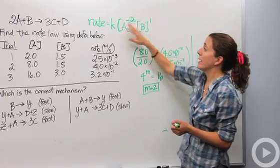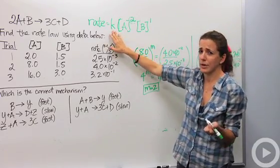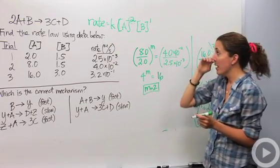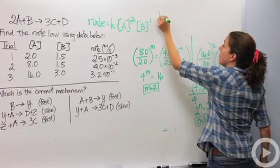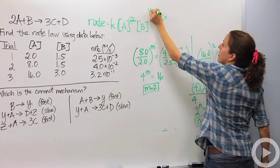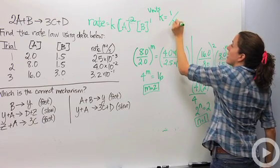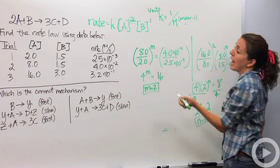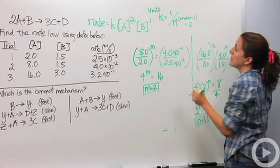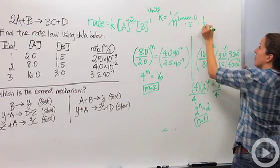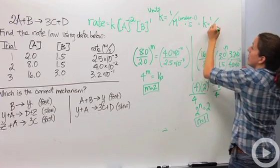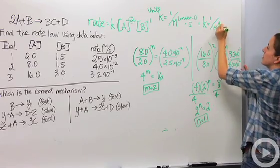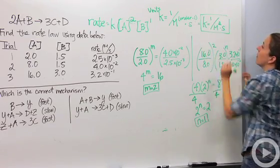So now we've found our rate law. We might also need to find the units for K. The units for K are fairly straightforward: K equals 1 over molarity to the power of (reaction order minus 1) times the unit of time — in this case, seconds. So the unit for K here is 1 over M² · s, because the overall order is third order (2+1=3), and the order minus 1 is 2.